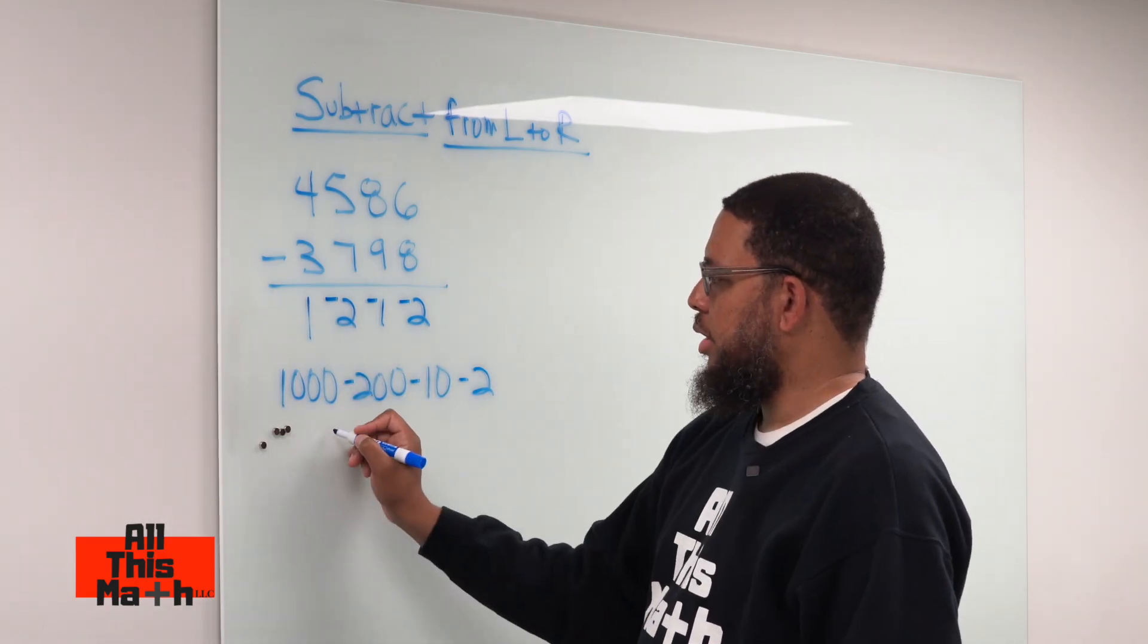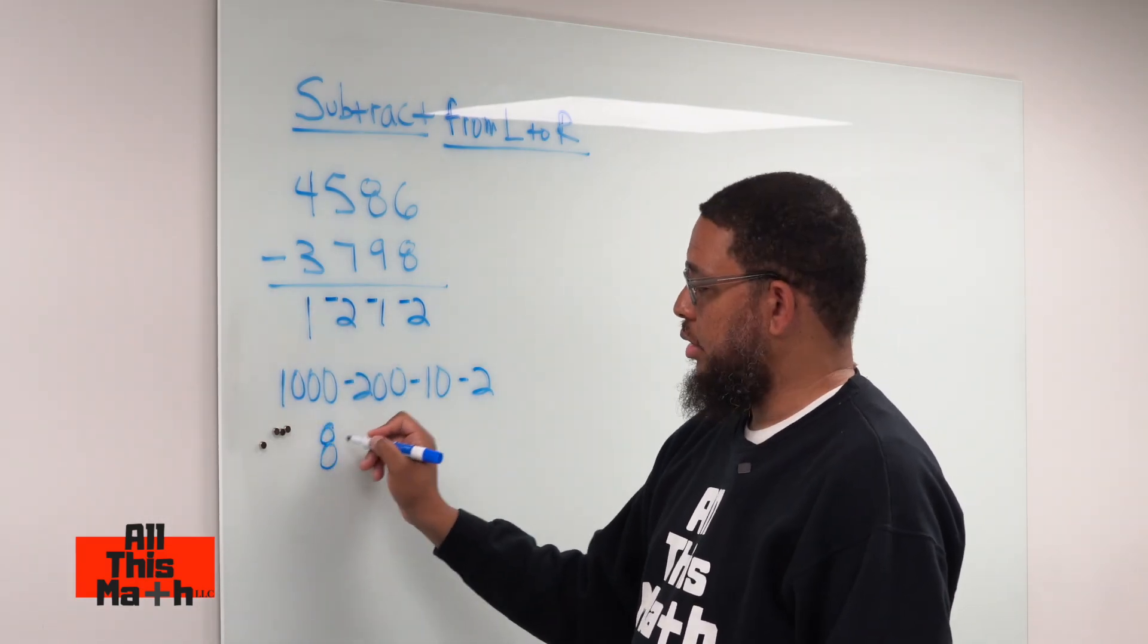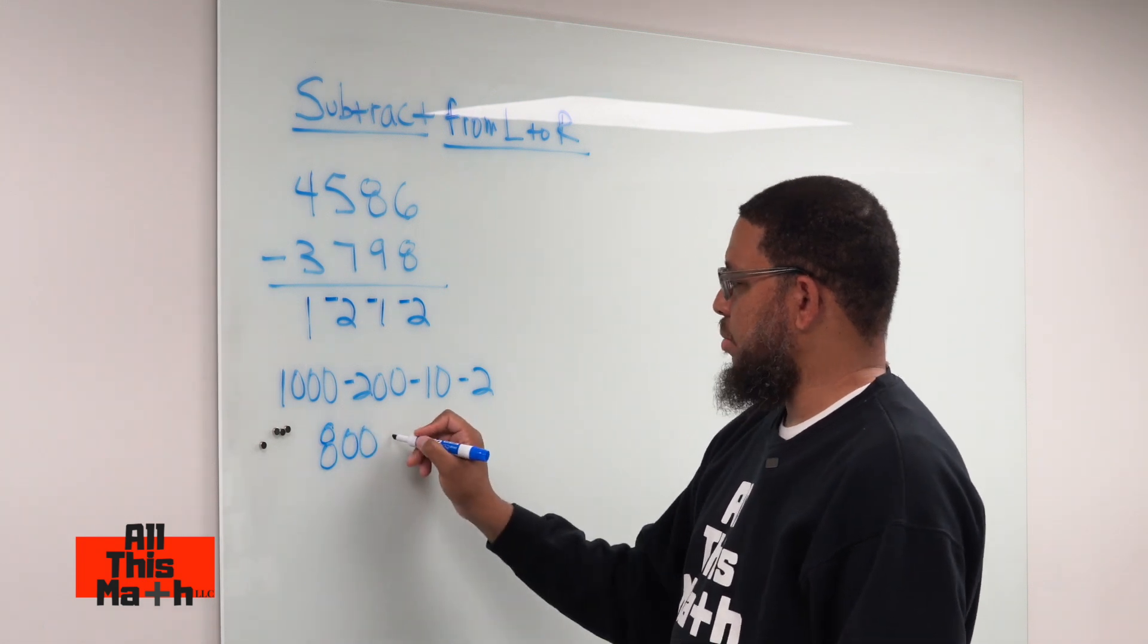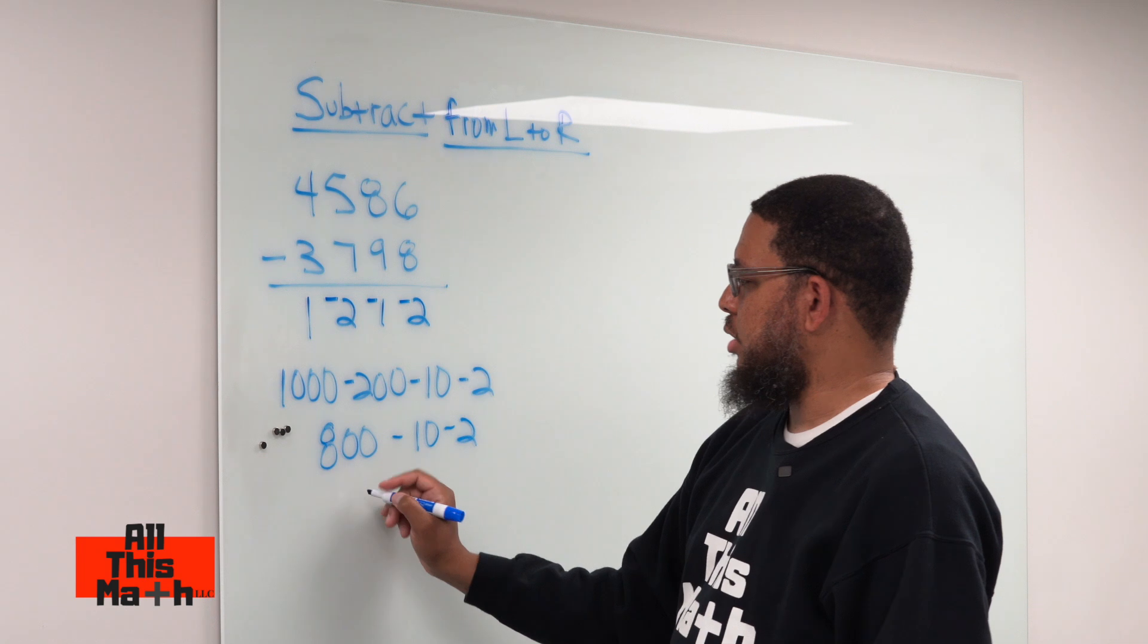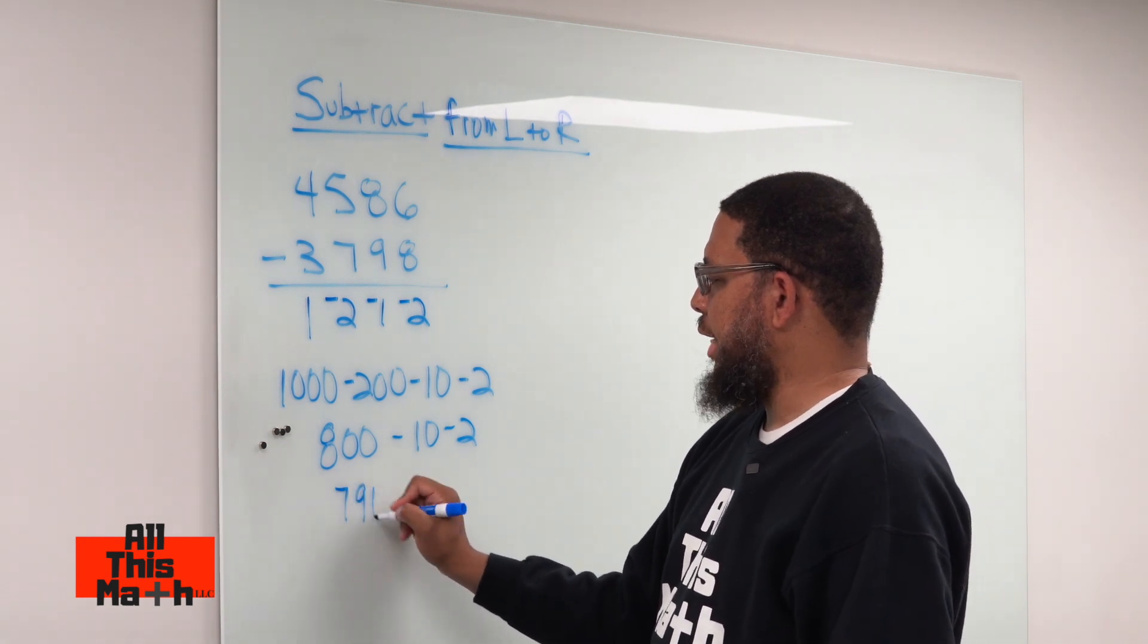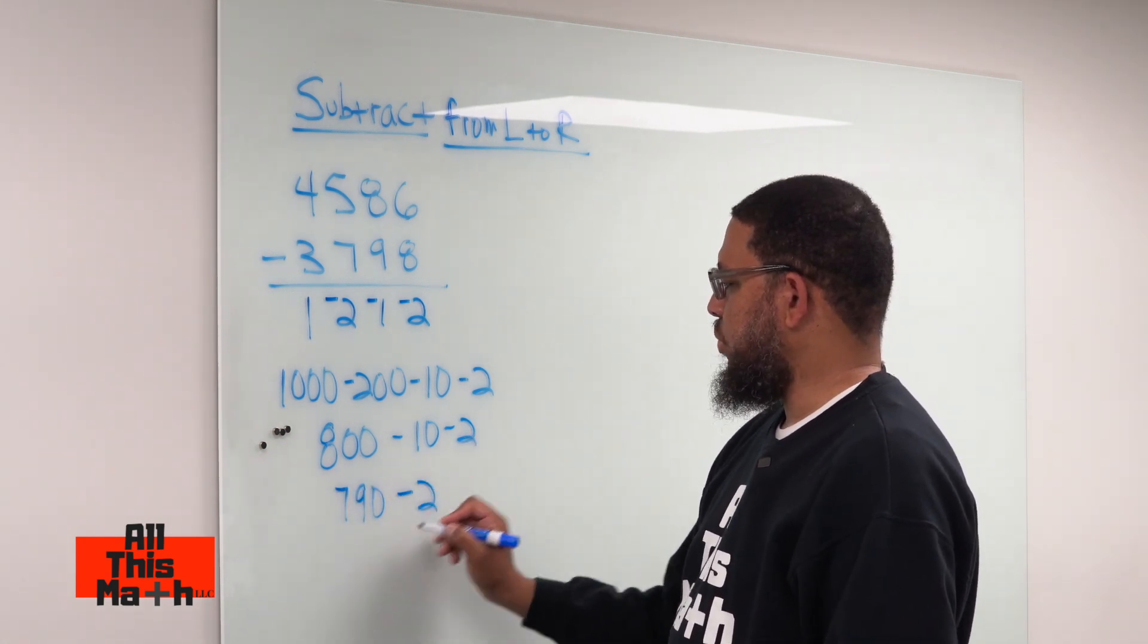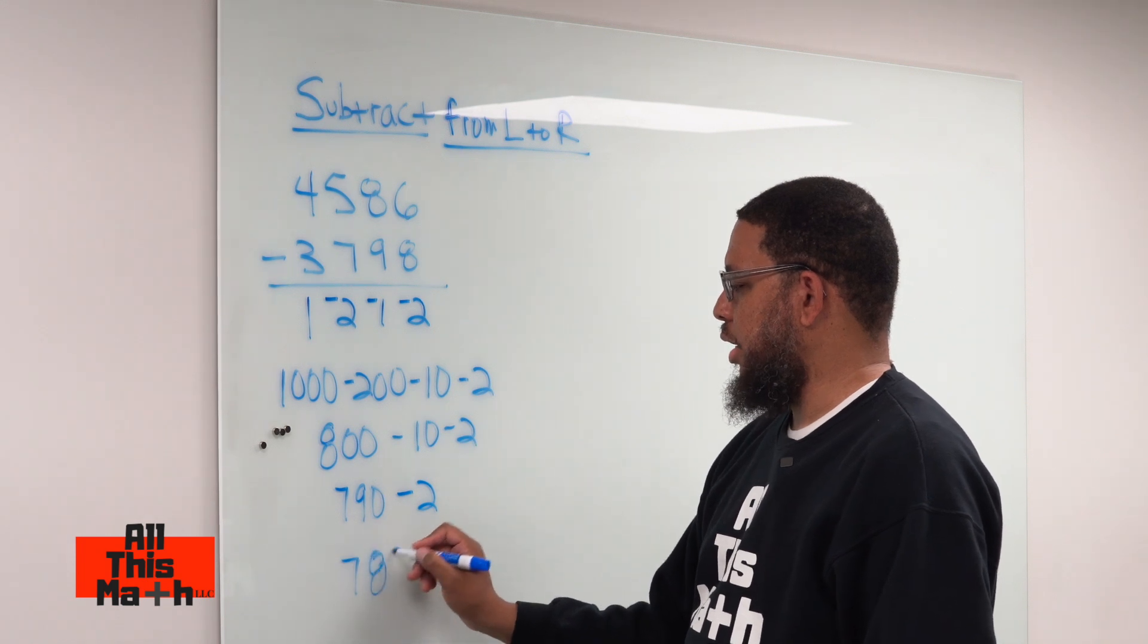So 1,000 minus 200 is going to give us 800. And then 800 minus 10 minus 2. 800 take away 10 is going to take us to 790. And then we got the minus 2, which is going to take us to 788.